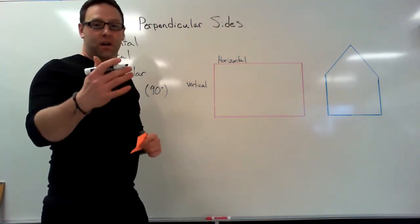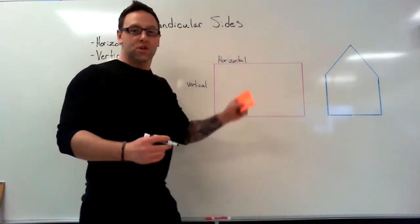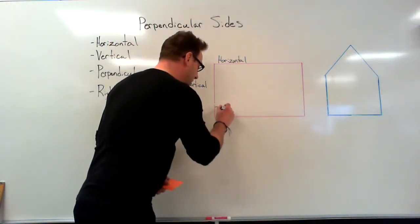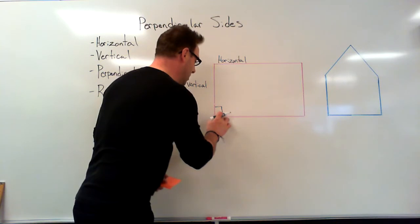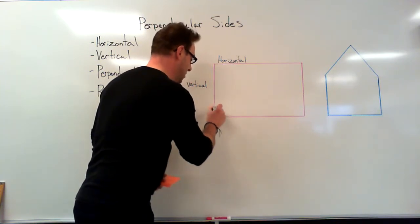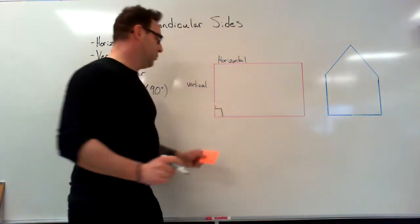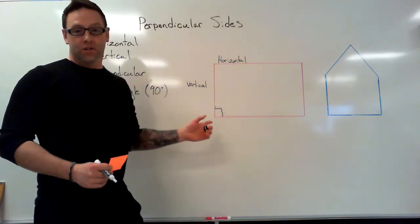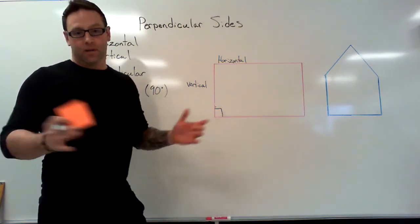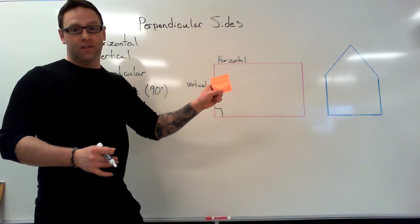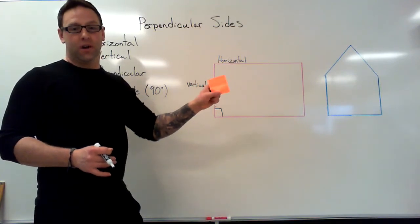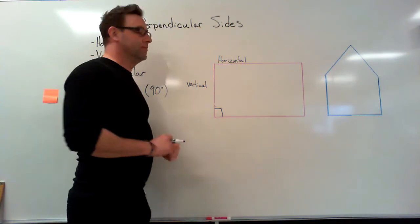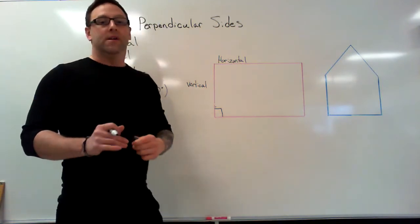We're going to use that square and put it in that corner. I didn't draw a perfect square there, but you can see that the lines are perfectly square by the piece of paper that I used right here.